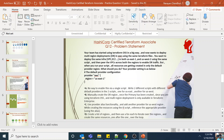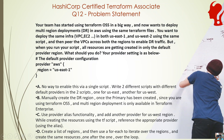Hello everyone, welcome back to the HashiCorp Certified Terraform Associate certification prep program. This is question number 12. Your team has started using Terraform OSS in a big way and now wants to deploy a multi-region setup for disaster recovery in AWS using the same Terraform files — deploying a VPC and EC2 in both US-East-1 and US-West-2 using the same script, then peering those VPCs across both regions to enable DR.